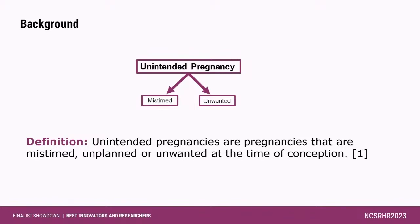Unintended pregnancies have many consequences, including unsafe abortion. Over 60% of unintended pregnancies end in abortion, and it also has consequences like neonatal mortality and miscarriage. This leads to our objectives: to examine the prevalence, inequalities, and determinants of unintended pregnancy over time in Bangladesh.